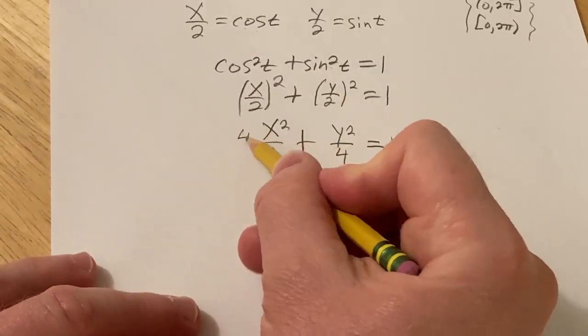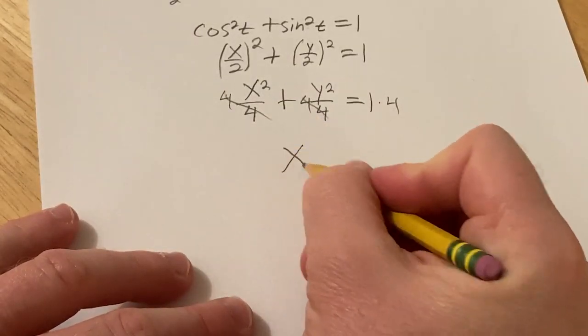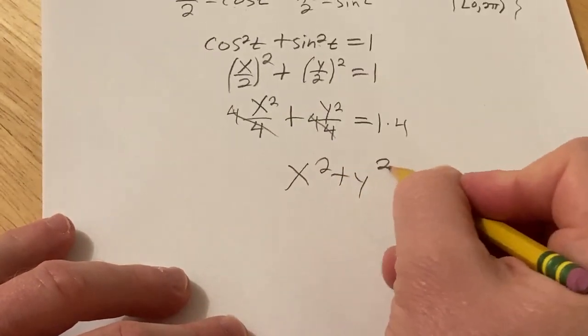And then to clear the fractions you just multiply everything by 4. So you get x squared plus y squared equals 4.